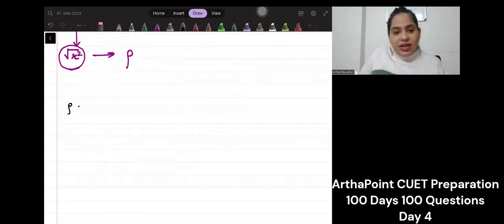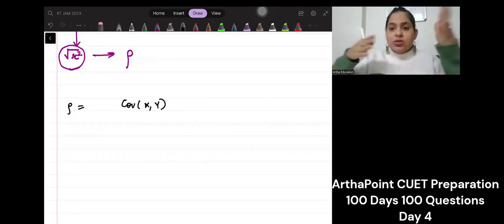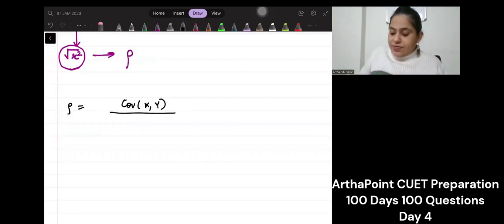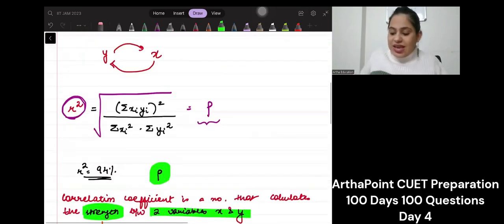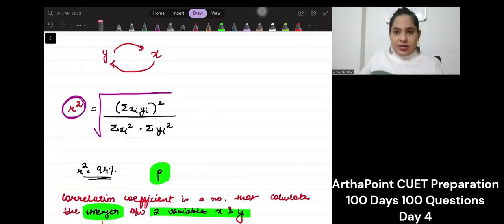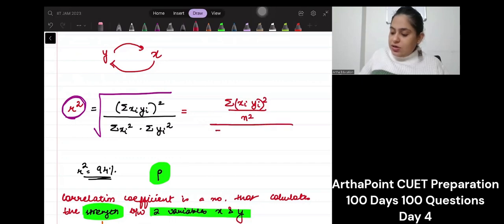The basic formula for rho is covariance between x and y - how is one affecting the other - divided by variance of x into variance of y under root. When you do this, you get this rho. Now if I go ahead and I want to change this, these are in deviation form. Suppose I divide by n square in the numerator, and in denominator also I divide it by n square. I divide it like this.